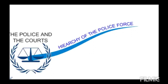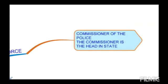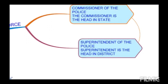First we will discuss about the hierarchy of the police force — what are the responsibilities and what are the parts of the police for the society. The district police hierarchy is divided into two parts. First is the superintendent of police. The commissioner of police is the head in the state, who has the power to look over all things. Then second, the superintendent of the police is the head in the district.